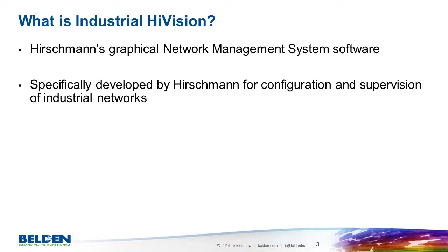When you try out Industrial HiVision, you'll notice that the look and feel is different to most office network management applications, whether commercial or open source. There are many reasons for this. Industrial networks are different to office networks. For example, due to their critical nature, industrial networks use very fast redundancy technologies which are never seen in office networks. These unusual topologies need to be visualized, which is not possible with office applications.